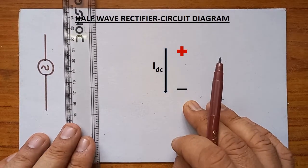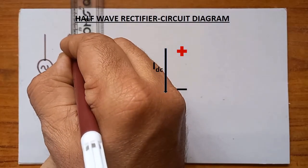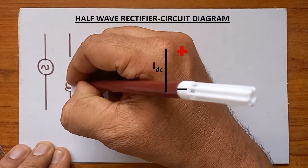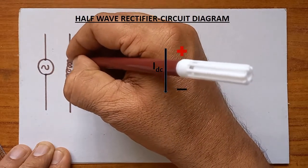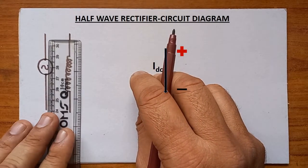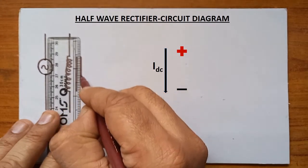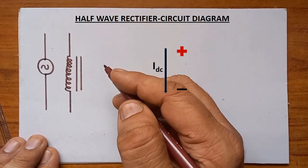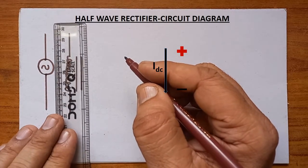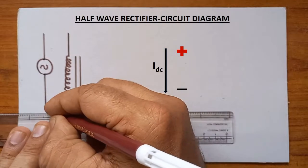Now we are going to use one step-down transformer. So here I am going to draw one step-down transformer. This is nothing but the primary half of the step-down transformer — the number of turns must be more. After drawing the primary of the transformer, to represent the insulated sheets, we have to draw these two lines. So the primary is drawn.